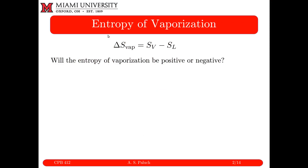So this is Chapter 7. First thing, which kind of got cut off from the last set of notes: entropy of vaporization. We know that at vapor-liquid coexistence for a pure component, the temperature, pressure, and molar Gibbs free energy of those two phases at coexistence are equal.